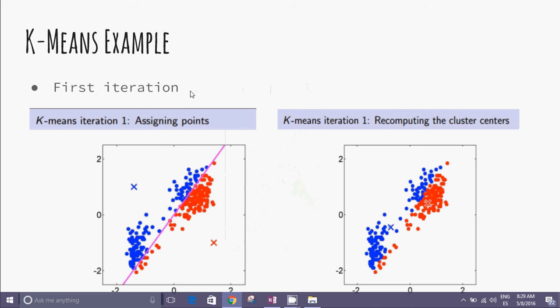In the first iteration, we assign points to each centroid: blue points to blue, red points to red. In the second part of the first iteration, we recompute the cluster centers, shown as the new crosses in blue and red.